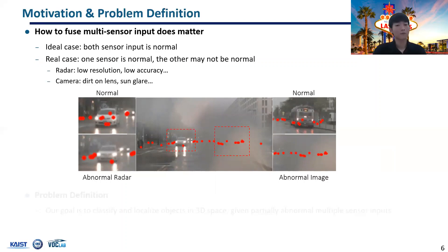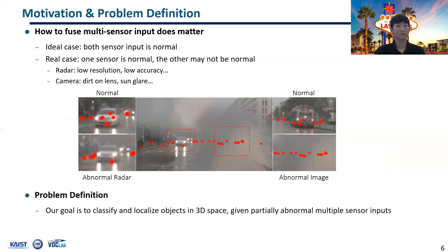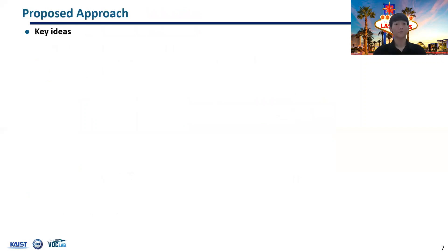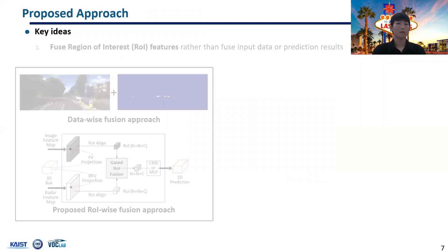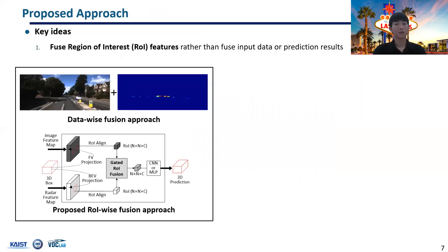This study focuses on robust 3D object detection even if one of the input data is abnormal or corrupted. We formulate the problem as classifying and localizing objects in 3D space given partially abnormal multiple sensor inputs. To solve this problem, we use two key ideas. First, instead of directly fusing the input data or fusing prediction results from each input, we fuse two ROI features from each modality. ROI-wise fusion is expected to make the best use of both sensor inputs.